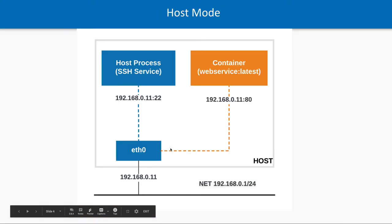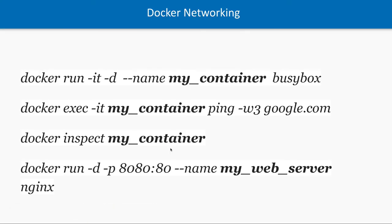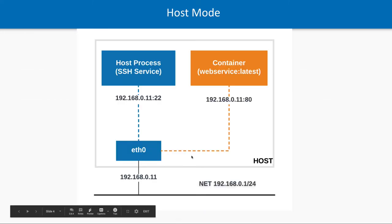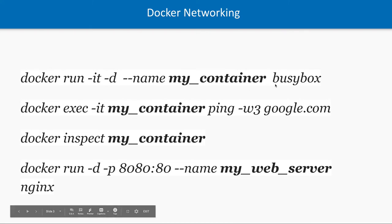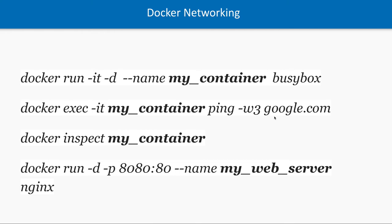Let's go with a simple example. We are creating a container from the busybox image, and then we are able to ping that container. This command is creating the container and then we are trying to access it using docker exec — running ping google.com on the container. You'll see that you are able to access that container, and when you inspect it, you see that the container has some IP assigned to it.